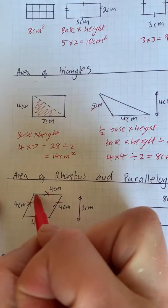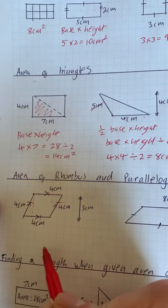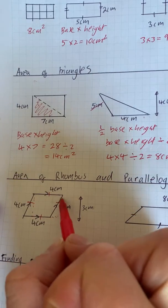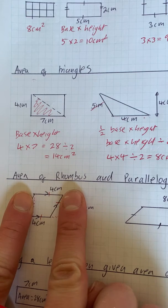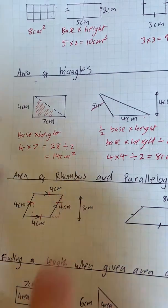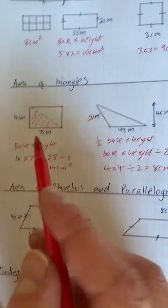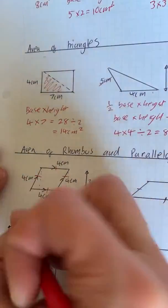Now with this, if we cut this bit down here and we add that triangle here, what we've got is a rectangle, or in this case it's a rhombus—a square. So the formula is exactly the same as the area of squares and rectangles: we just do the height times the base.